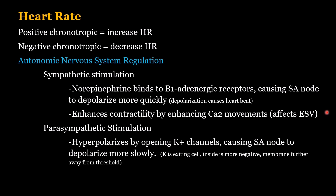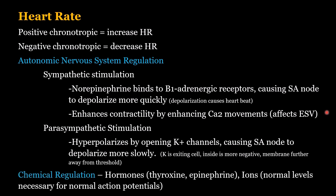The other regulatory mechanism is chemical regulation via the endocrine system. Hormones like thyroxine and epinephrine are positive inotropic agents that affect heart rate. You also need normal ion levels for normal action potentials — if your ion levels are off, it will wreak havoc with your heart rate.